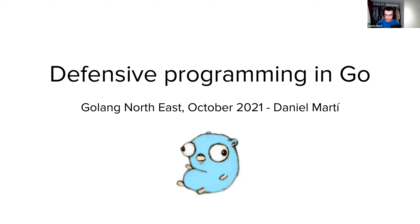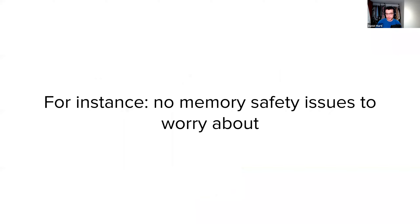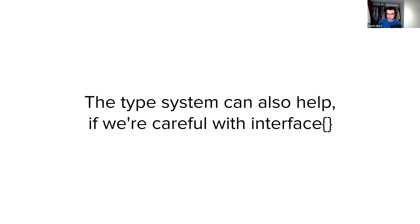I'm going to be talking about defensive programming in Go. Defensive programming essentially means that your program should be as resilient as possible to unforeseen circumstances — you should aim to avoid bugs that you know might be there, but also bugs you might not know about now or that might appear in the future. As an introduction, I want to talk about what people mean when they say Go or languages like Go are safe. As long as you don't use unsafe, Go already defends you from some bugs — no memory safety issues, no buffer overflows, no use-after-free. The type system can also help if you avoid using empty interfaces too much. But there's still room for some defensive programming techniques.